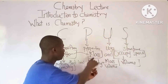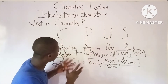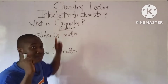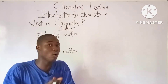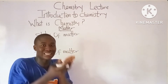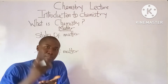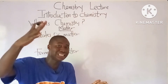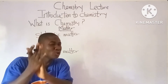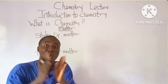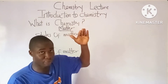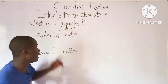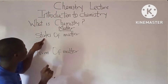Let's quickly talk about matter proper. Matter is anything that has mass and occupies space, or simply, matter is anything that has density, because the relationship between mass and volume is what we call density. Now let's move over to the next theme: states of matter and forms of matter.